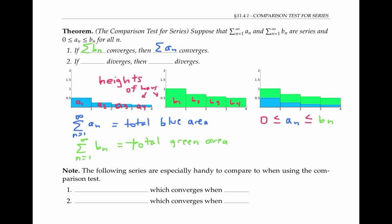Furthermore, if the total blue area is infinite, then so is the total green area. So we can also say: if the sum of the a sub n's diverges, then so does the sum of the b sub n's.